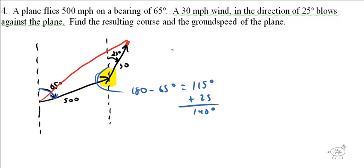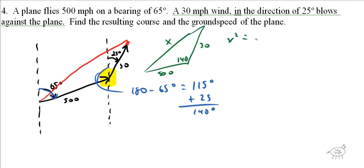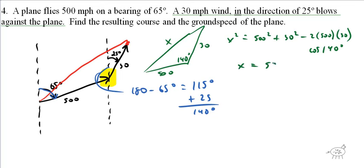So the picture is: 500, 30, and 140 degrees, and I'm looking for x. Using law of cosines: x² = 500² + 30² − 2(500)(30)cos(140°). Multiplying all that out, we get x equals 523.3 miles per hour.